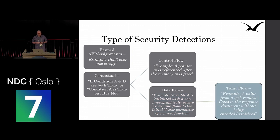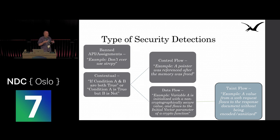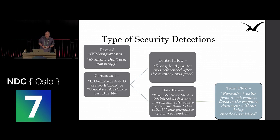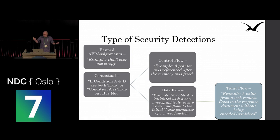As a specific subset of data flow, taint flow analysis is most relevant to web applications and modern software. You're looking for untrusted data entering the application that then flows into a function or assignment where untrusted data isn't safe to use, while checking that in between the ingestion and the use there isn't a function that sanitizes it. This covers cross-site scripting, command injection, deserialization attacks, and similar problems. These are the broad catch-all categories that a good analysis solution needs to be capable of performing.